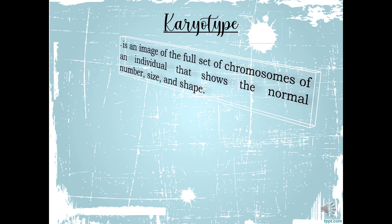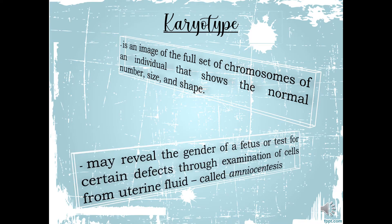Let us first discuss karyotype. It is an image of the full set of chromosomes of an individual that shows the normal number, size, and shape. It is simply a picture of an organism's chromosomes. In order to get this image, the chromosomes are examined under the microscope. The second definition of karyotype is that it may reveal the gender of a fetus or test for certain defects through examination of cells from uterine fluid